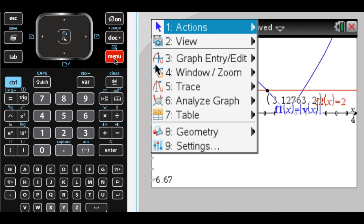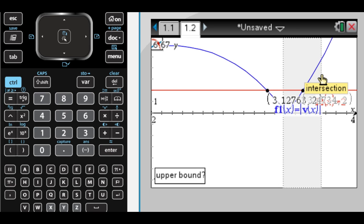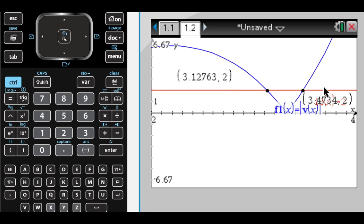And then do it again. So analyze graph, intersection, and the calculator's not really happy about this. Alright, so I have my two values.